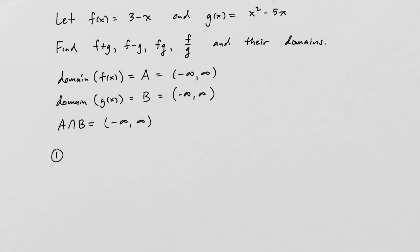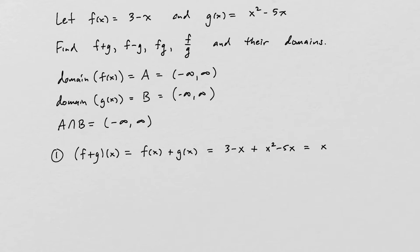For the first part, the function f plus g of x is defined to be f of x plus g of x. That means we take 3 minus x and add it to x squared minus 5x. Combining like terms, we get x squared minus 6x plus 3. The domain is all real numbers, since that is A intersected with B.